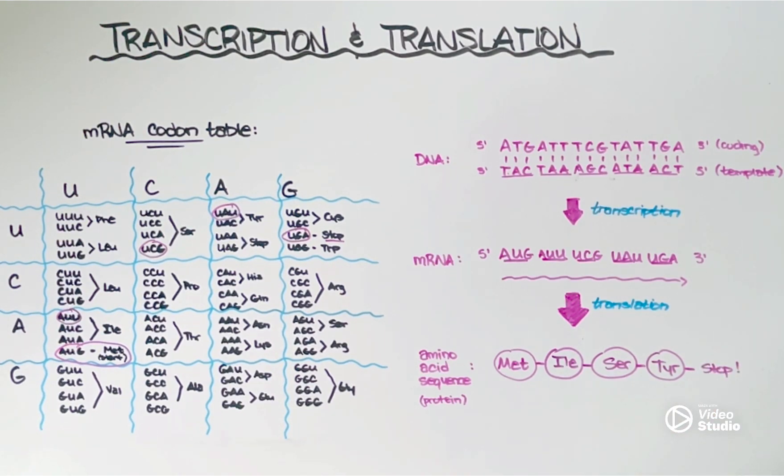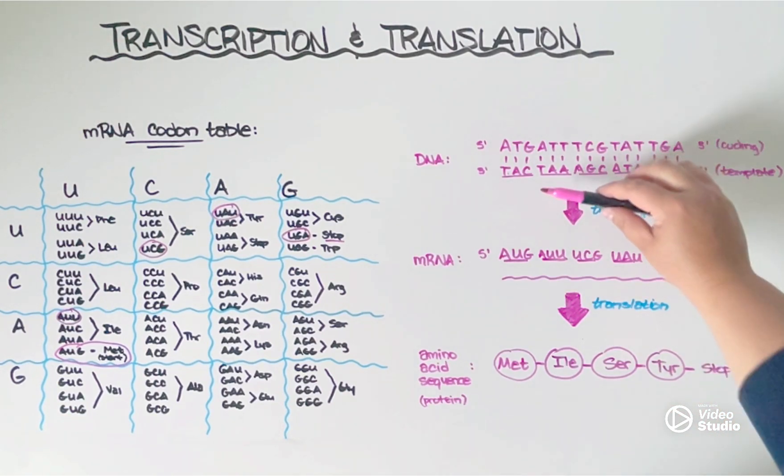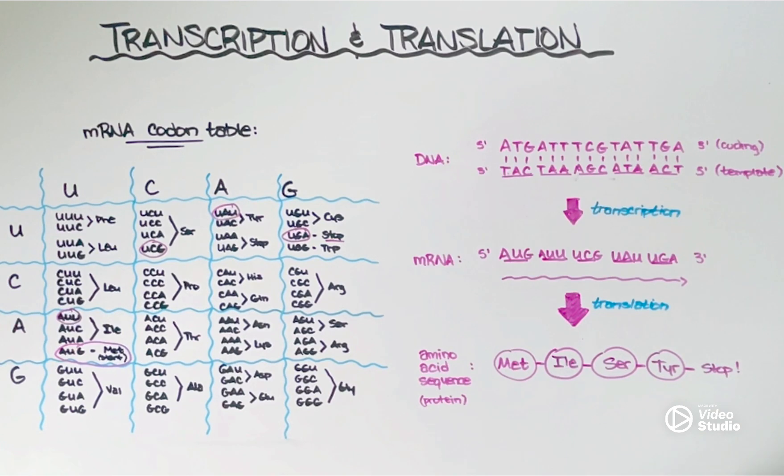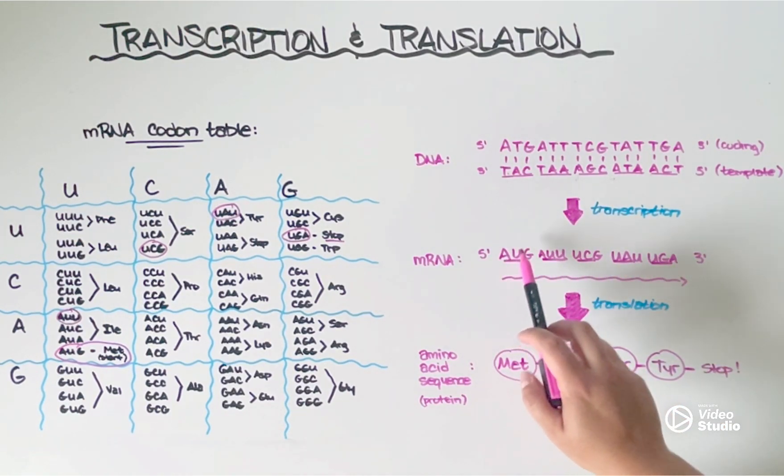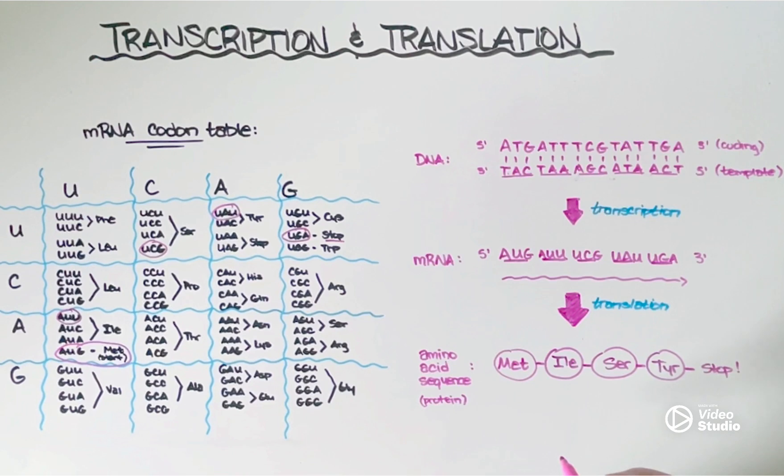And that's it. It's actually pretty simple. It's a two-step process. And all you need to remember is for transcription, make sure you're using the template strand of DNA, the 3' to 5' to sequence your new mRNA strand. Make sure anytime you are adding complementary nucleotides, if there should be a T, you actually replace it with a U. And then lastly, make sure that you have access to an mRNA codon table so that you can translate each of those groupings of 3's into your amino acid sequence.